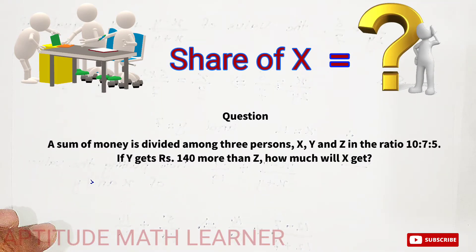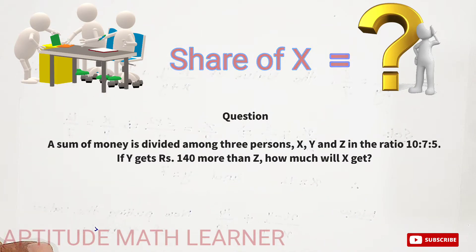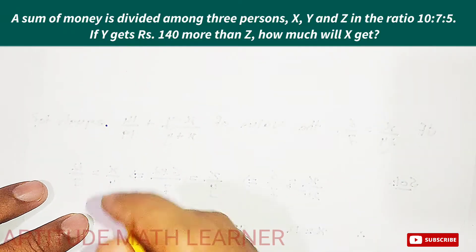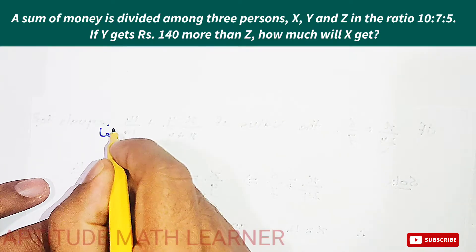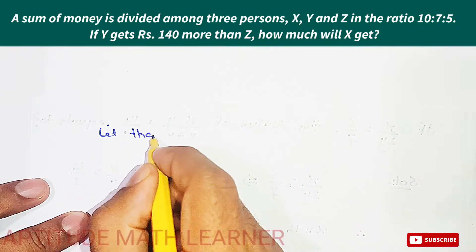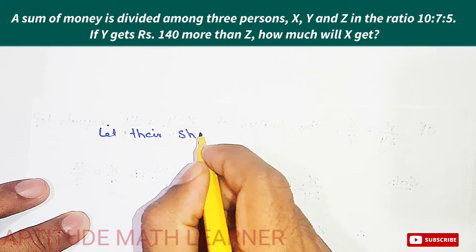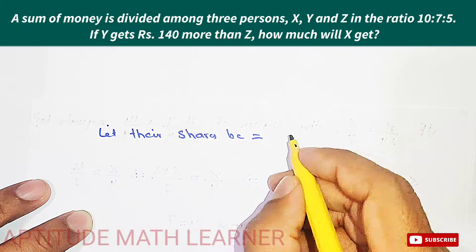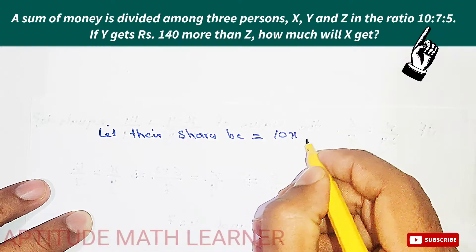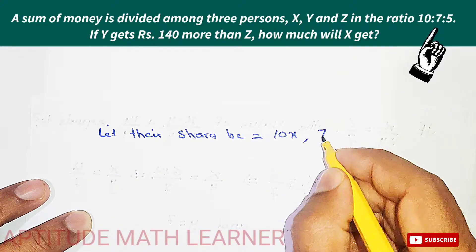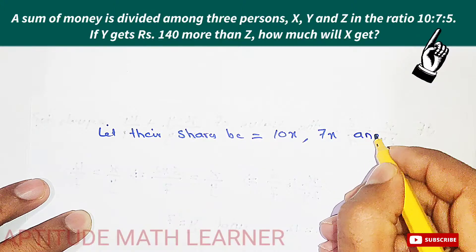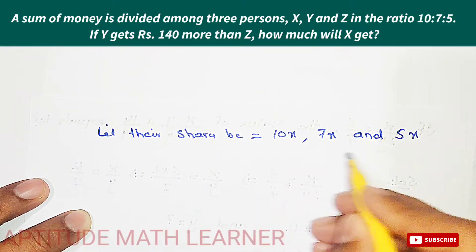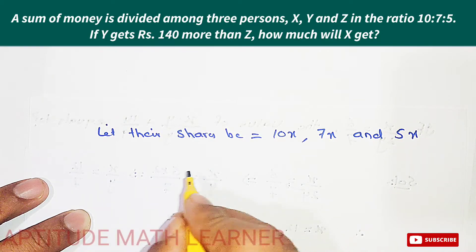The first thing we have to do is let their shares be in the ratio. So we take 10x, 7x, and 5x. These are the shares of X, Y, and Z respectively.